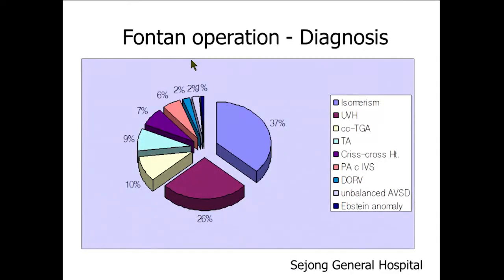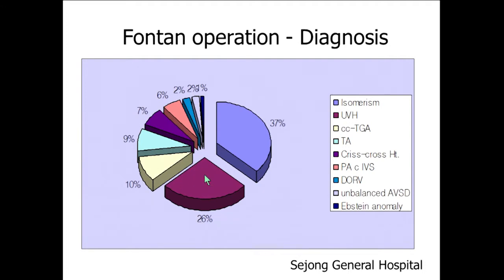Given that a functionally univentricular heart is unsuitable for biventricular repair, the heart can be managed by creating Fontan circulation. This figure shows the spectrum of functionally univentricular hearts from Sejong General Hospital patients who had a Fontan operation. One third had isomerism, one fourth had a so-called univentricular heart, and 10% had CCTGA, tricuspid atresia, crisscross heart, and so on.